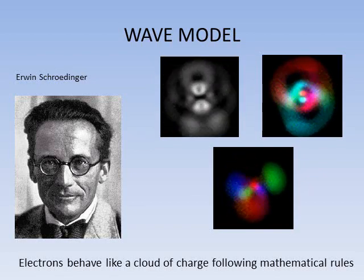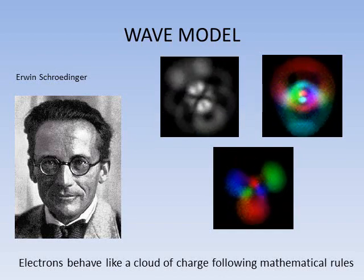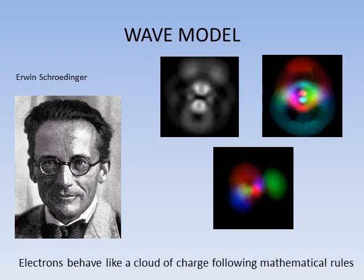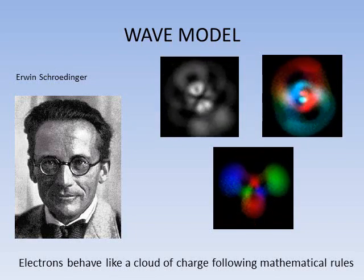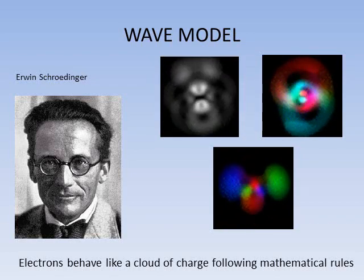Schrödinger used three quantum numbers to describe the electrons' position in space. The first number described the size, the second described the shape, and the third number described the orientation of the orbitals in space. A fourth quantum number was used to describe the spin of the electrons, but that's more than we need to know for this course.